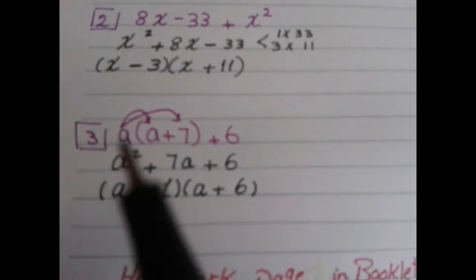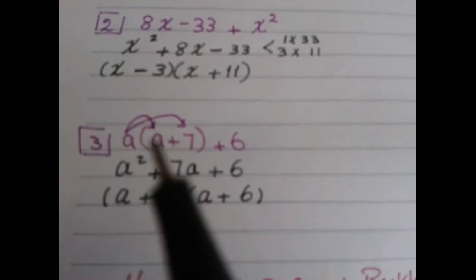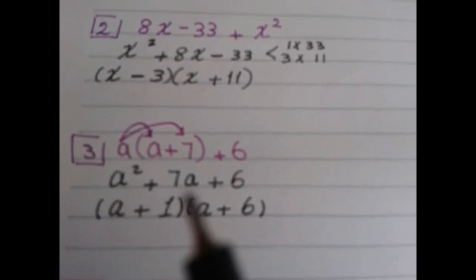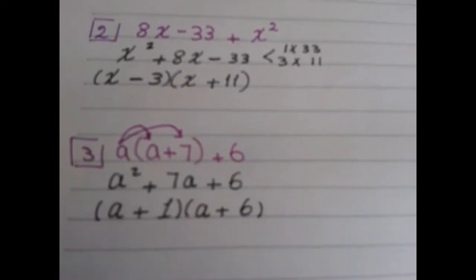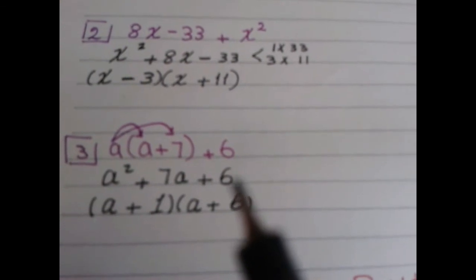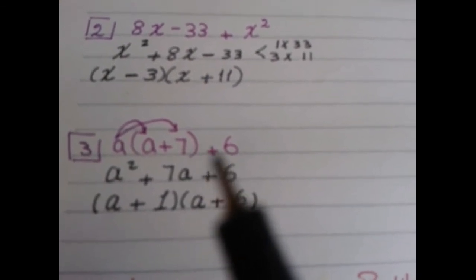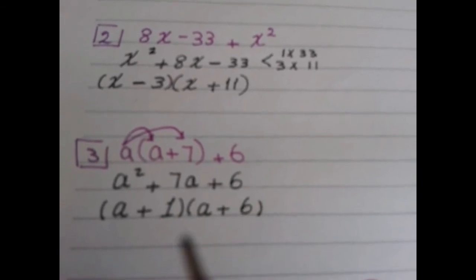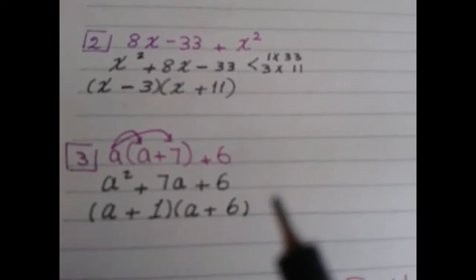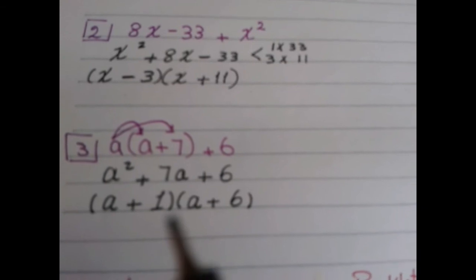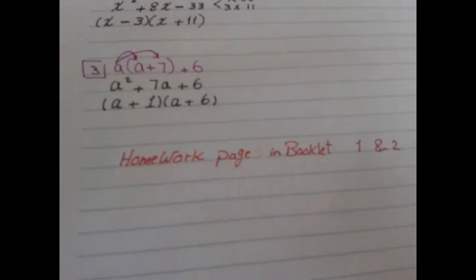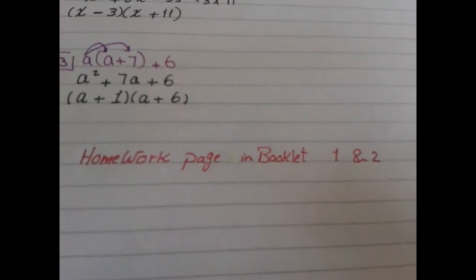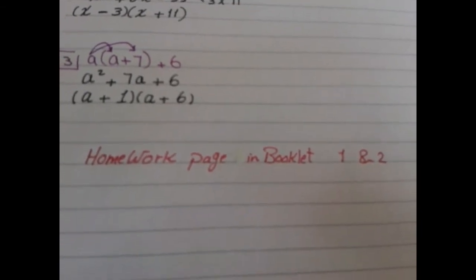Here is another example using variable A: A times A and A times 7 gives A squared plus 7A plus 6. Factorize it — two numbers whose product is 6 and sum is 7: 1 times 6 equals 6 and 1 plus 6 equals 7. I hope you understood the lesson. Your homework will be pages 1 and 2 in the algebra booklet, exercises 5, 8, 9, and 12.